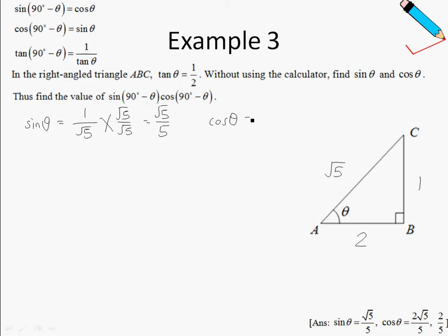How about the cosine of theta? The cosine of theta is defined as adjacent, which is 2, over hypotenuse, which is root 5.